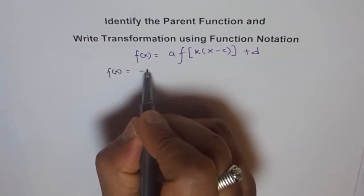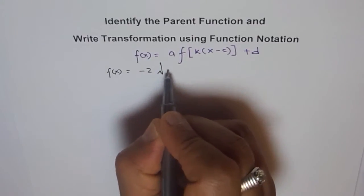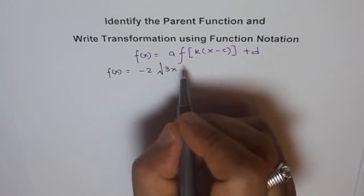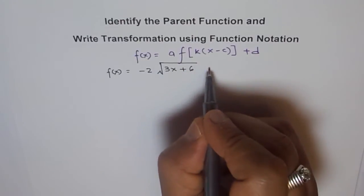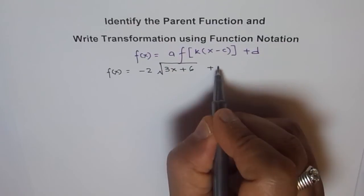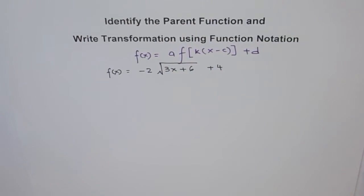minus 2 square root of 3x plus 6 plus let's say 4. Now that's our function, and the question is identify parent function, right?